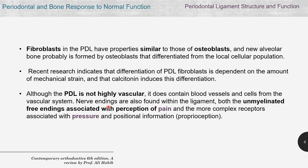There are two types of nerve endings: unmyelinated free endings associated with the perception of pain, and more complex receptors associated with pressure and positional information — what we call proprioception.